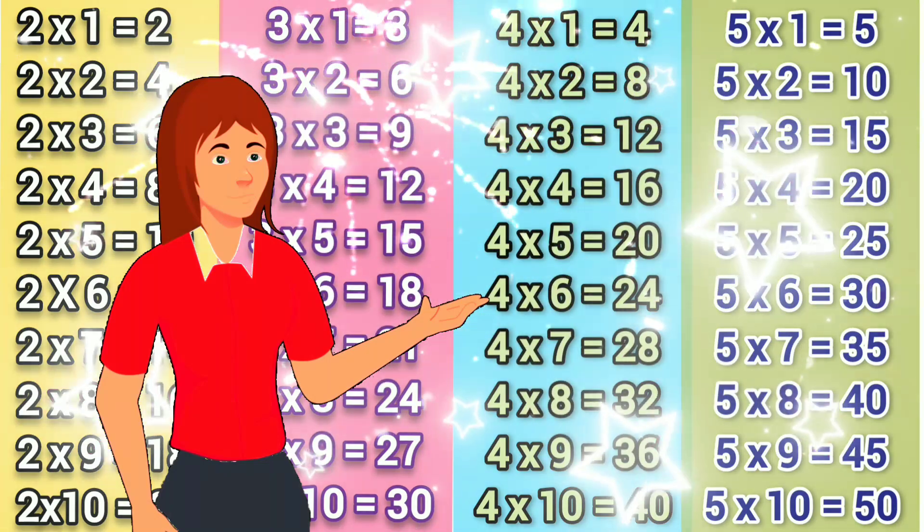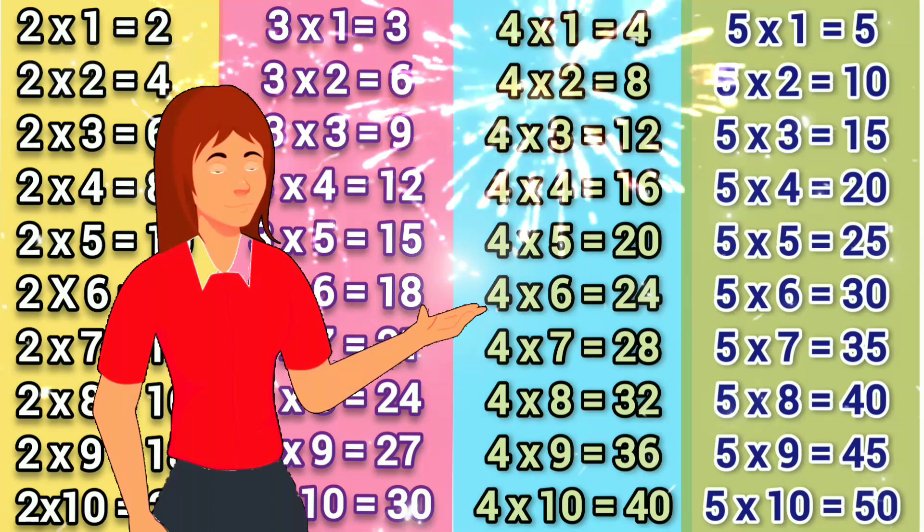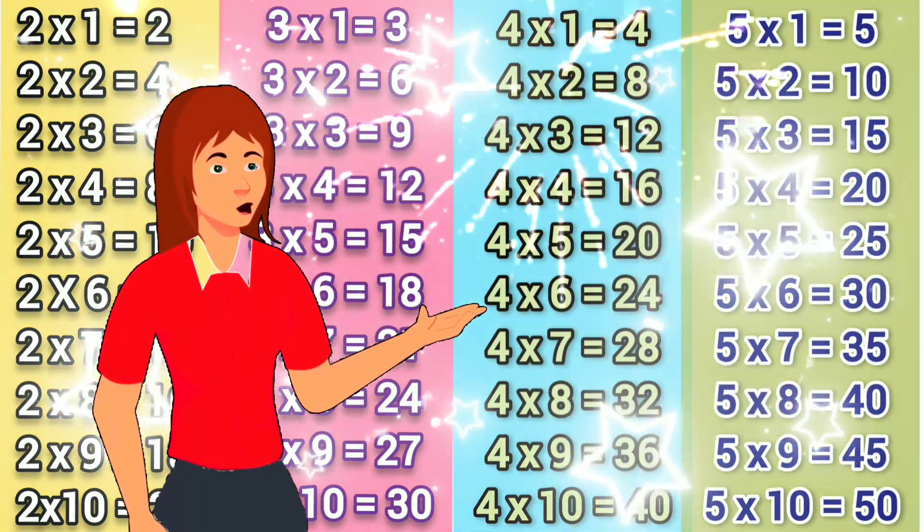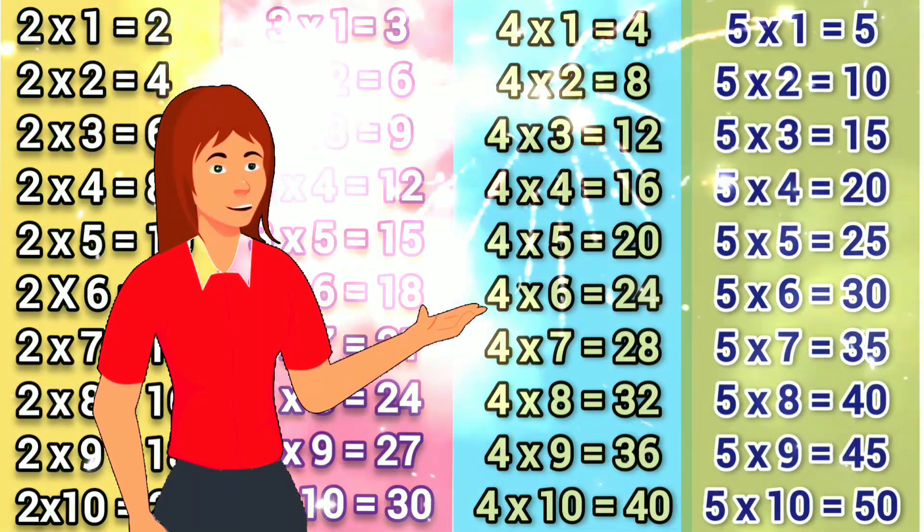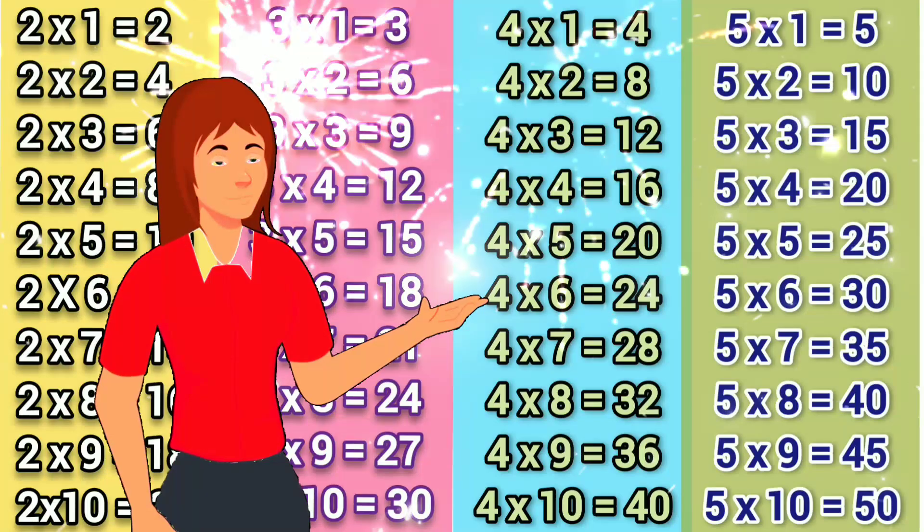4 6's are 24, 4 7's are 28, 4 8's are 32, 4 9's are 36, 4 10's are 40,